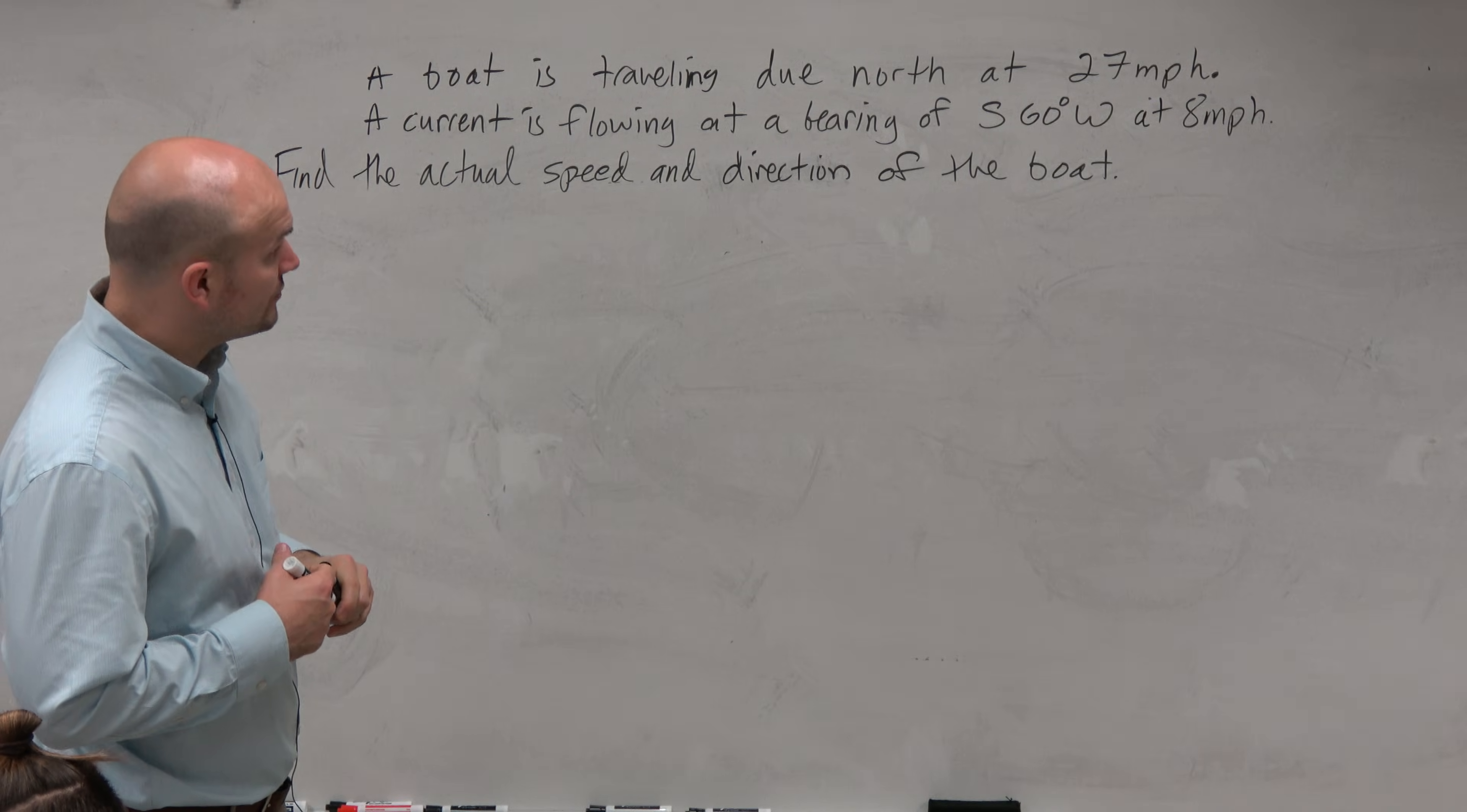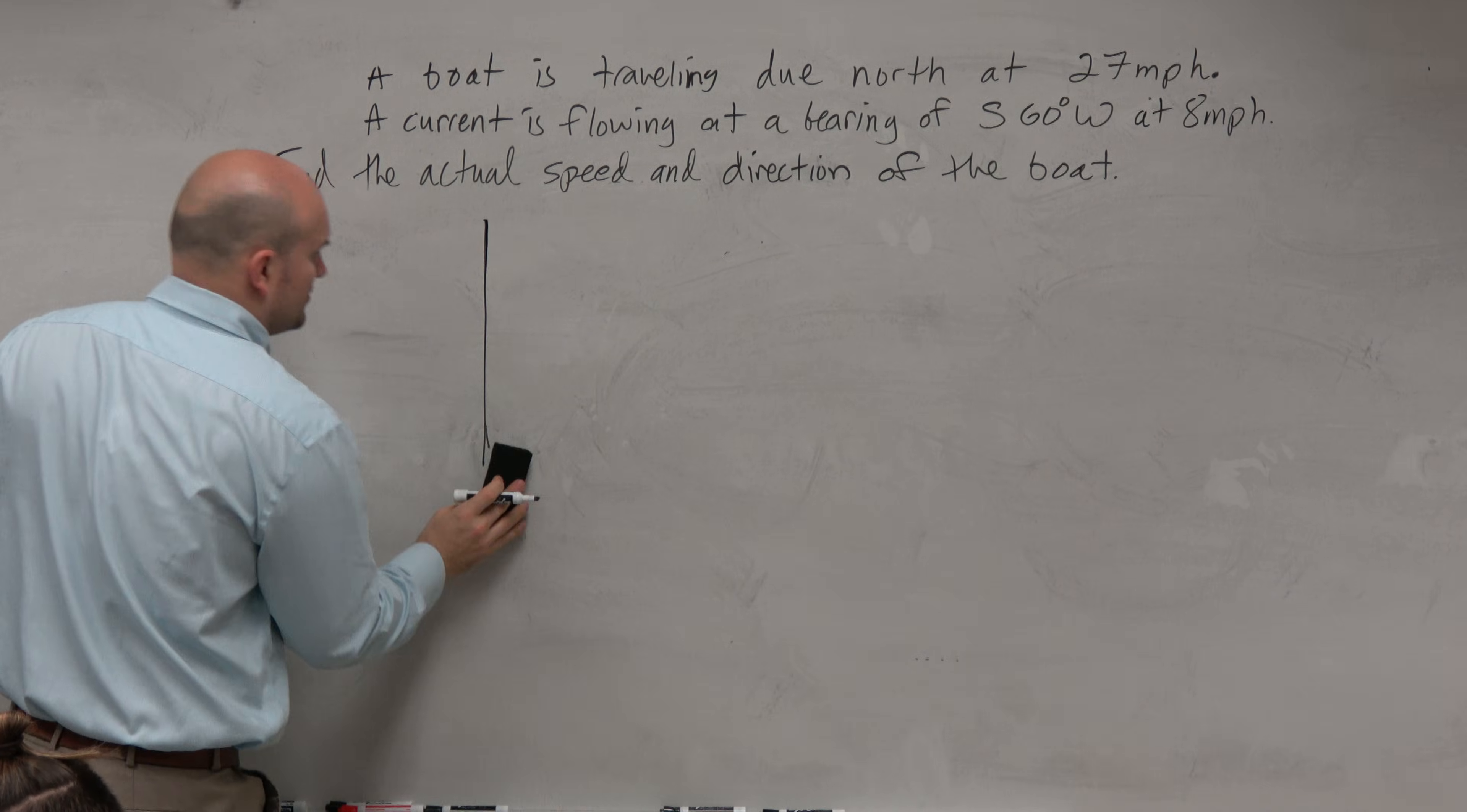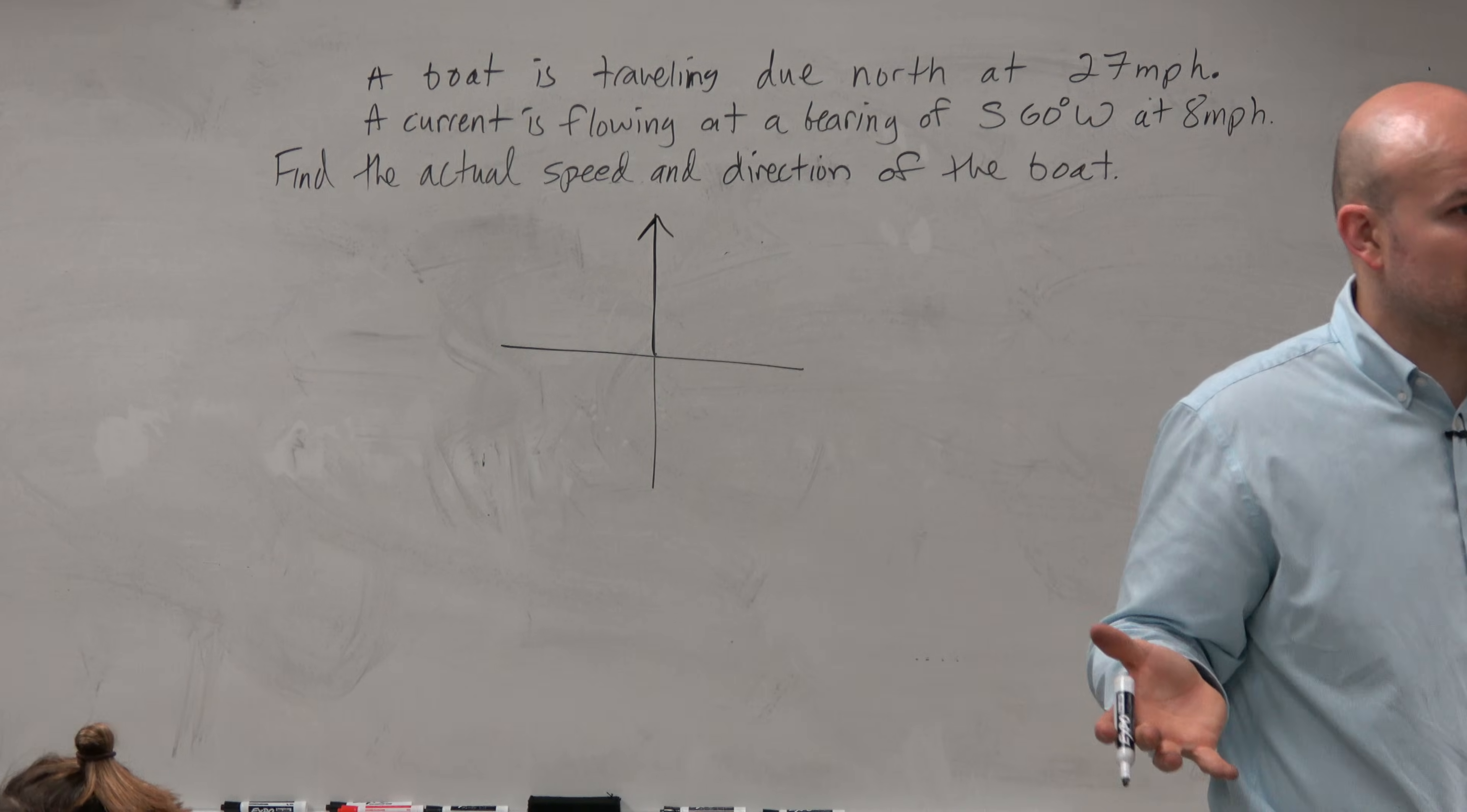So we have a vector of a boat that's traveling due north. So I have a bearing that I know I'm going to create a bearing. So here's my boat due north. Now, the magnitude is just I have a rate, 27 miles per hour.